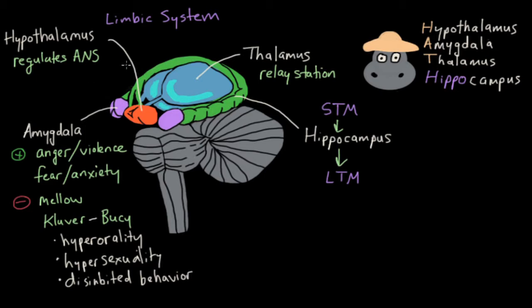So that's the limbic system. And these are the four basic structures. The thalamus, the amygdala, the hippocampus, and the hypothalamus. So these are the basic structures of the limbic system.